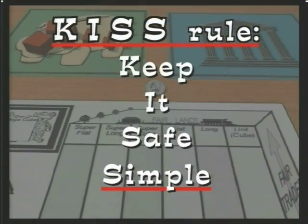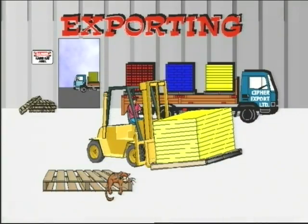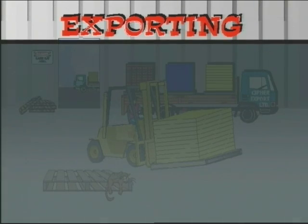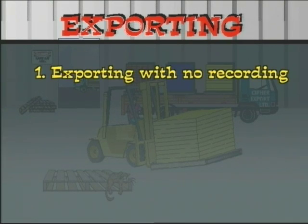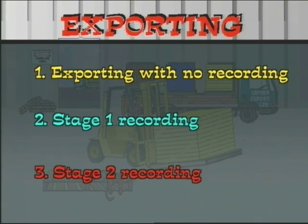Most likely the simple part of the KISS rule was violated by trading down more than was necessary to load the truck. The same three levels are used for exporting: one, exporting with no recording; two, with stage one recording; and three, with stage two recording.